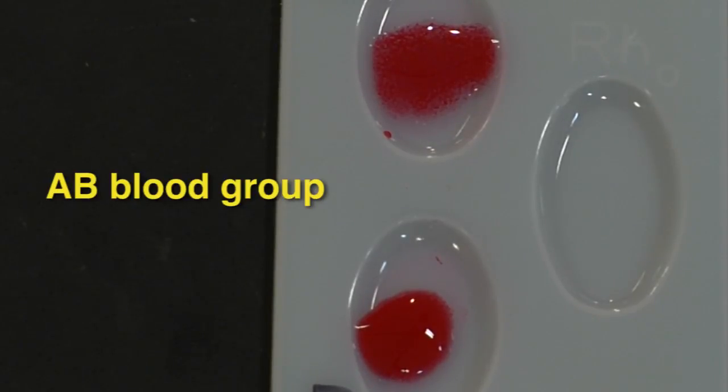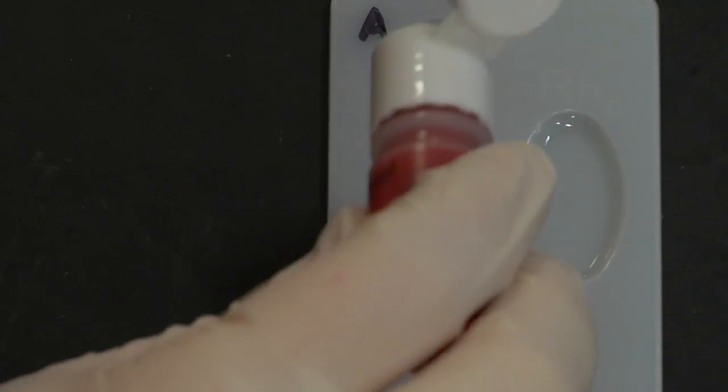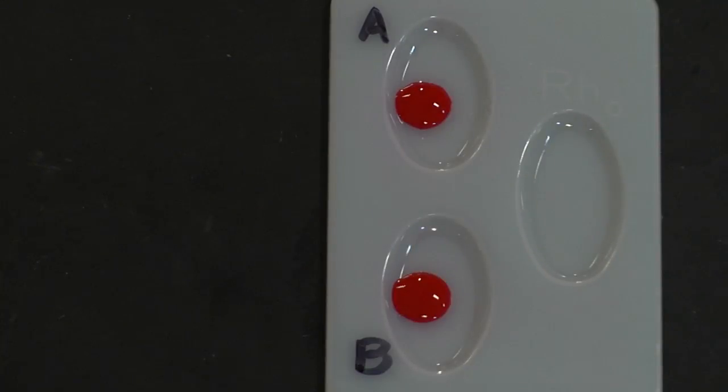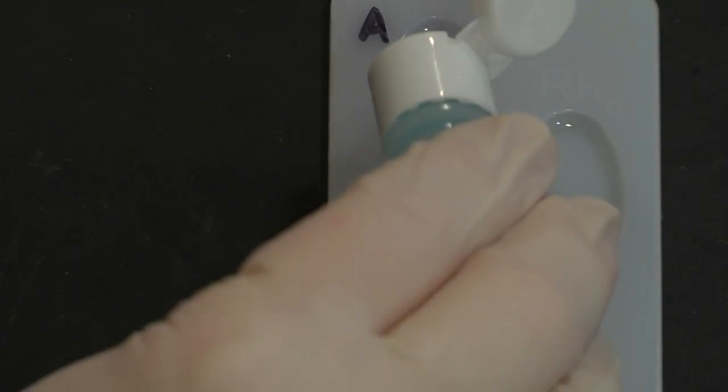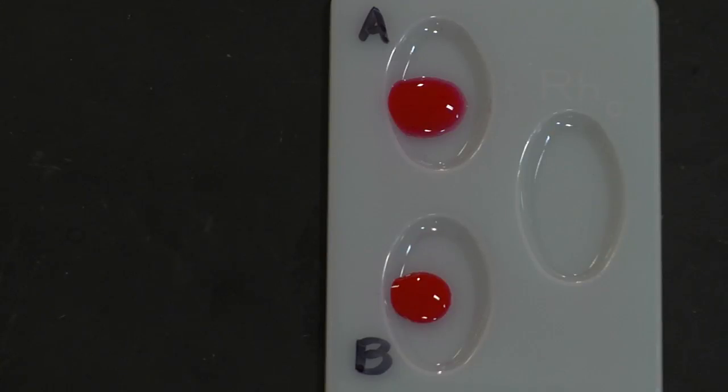Let's test another one. Now we are following the exact same procedures as before. I will place one drop of the second blood sample into each well. Then I'll place a drop of the anti-A serum into well A and a drop of the anti-B serum into well B.